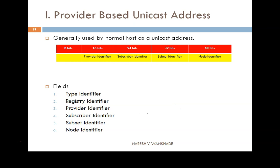Generally it is used by normal hosts as a unicast address. The IPv6 address is 128 bits long, as we have seen earlier. It has six important fields: first is the type identifier, second is the registry identifier, third is the provider identifier, fourth is the subscriber identifier, fifth is the subnet identifier, and sixth is the node identifier.